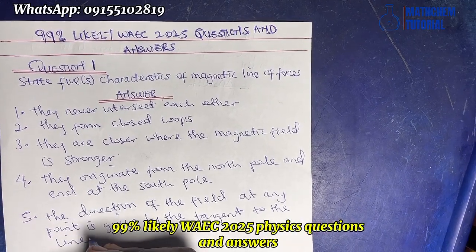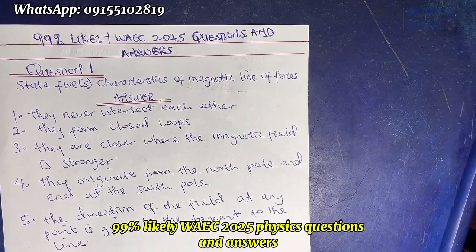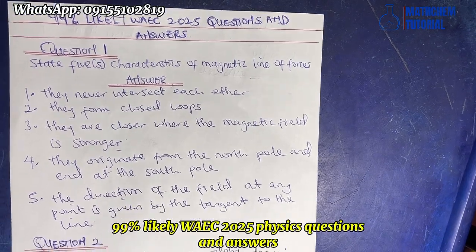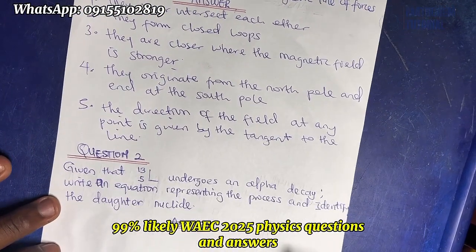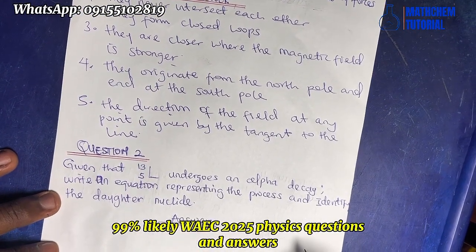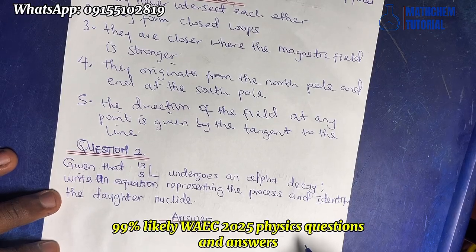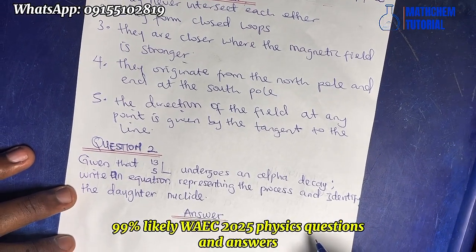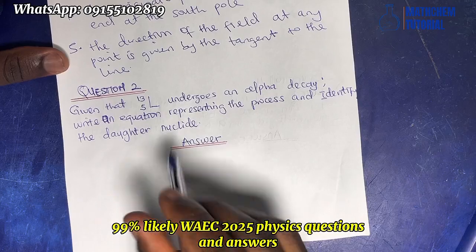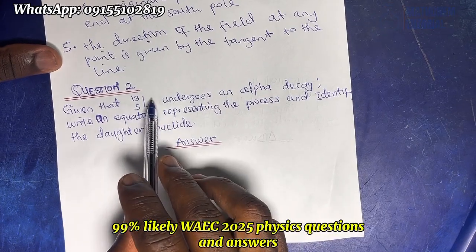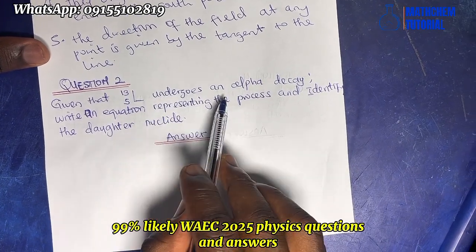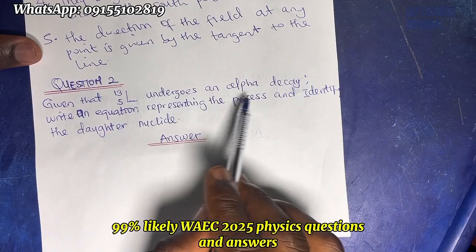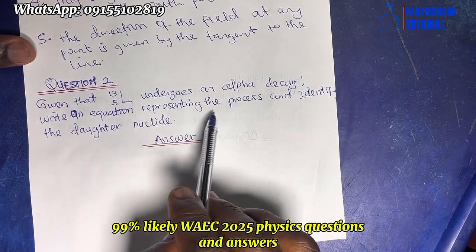So those are the five characteristics of magnetic lines of force. Now let's move to question two. Given that lithium-13 undergoes alpha decay, write an equation representing the process.